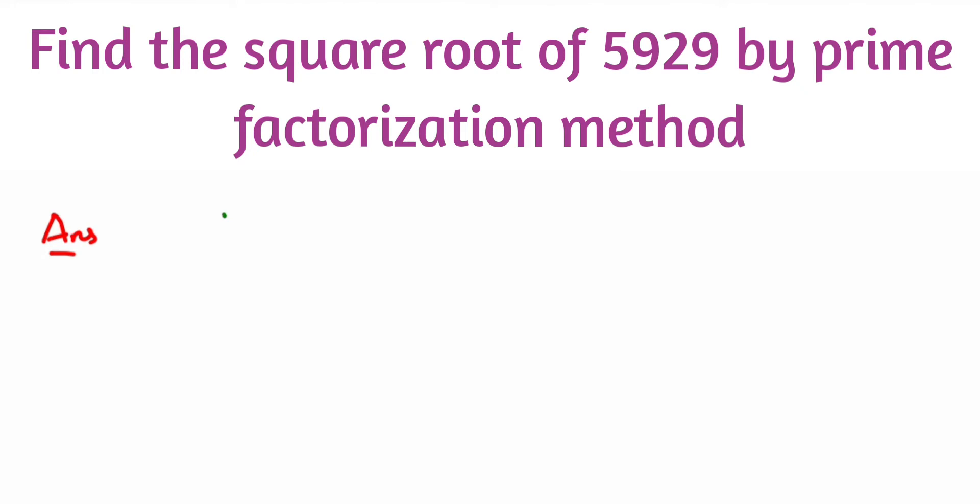So here's the question on square and square root: find the square root of 5929 by prime factorization method. First we're going to do the prime factorization of 5929, so I'll take the number inside this.